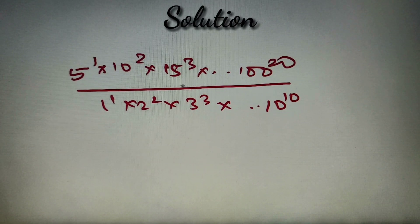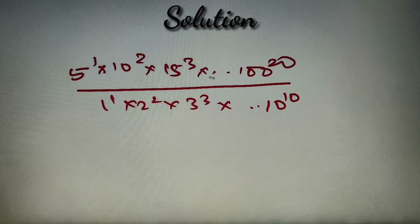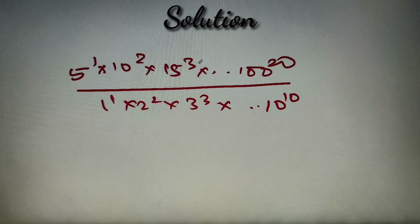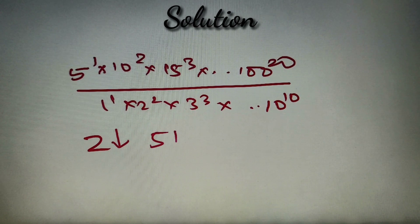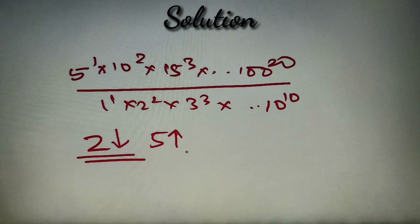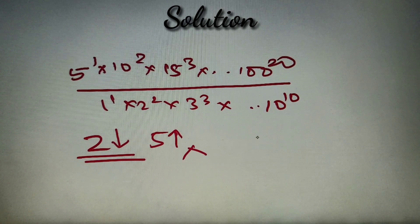We have to calculate the highest power of 5 and 2 in this number and take the lesser of the two. Looking at the number carefully, we have a higher power of 5 in the numerator and lower power of 5 in the denominator. For powers of 2, we have a higher power in the denominator but lower in the numerator. So the powers of 2 in this number are lower than the powers of 5. We can simply calculate the powers of 2 to get our result, without needing to calculate powers of 5.